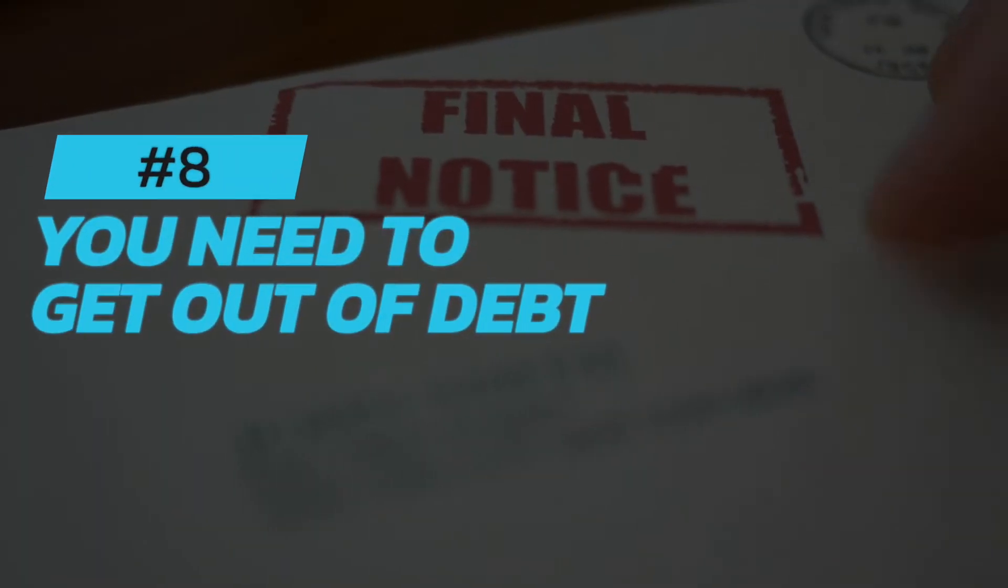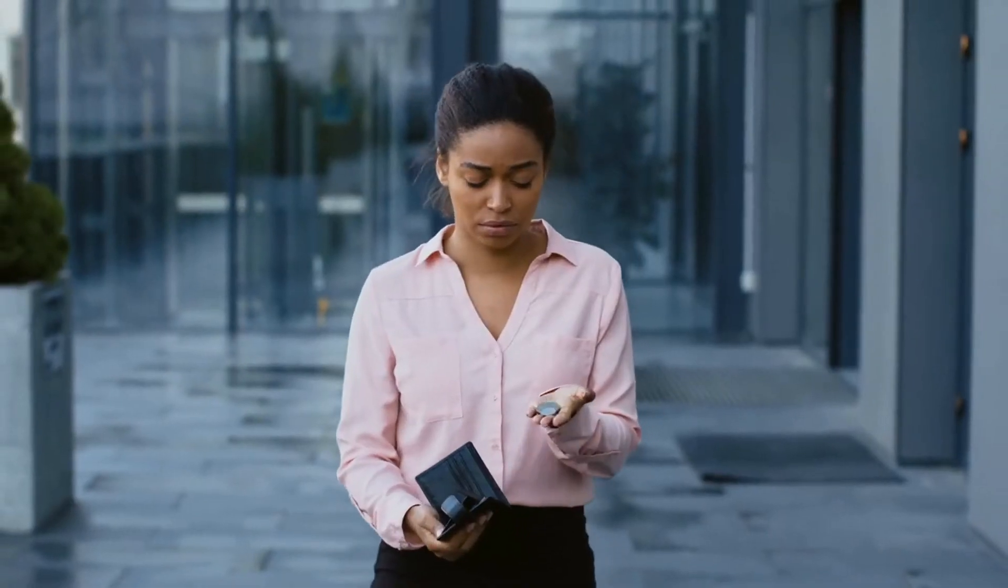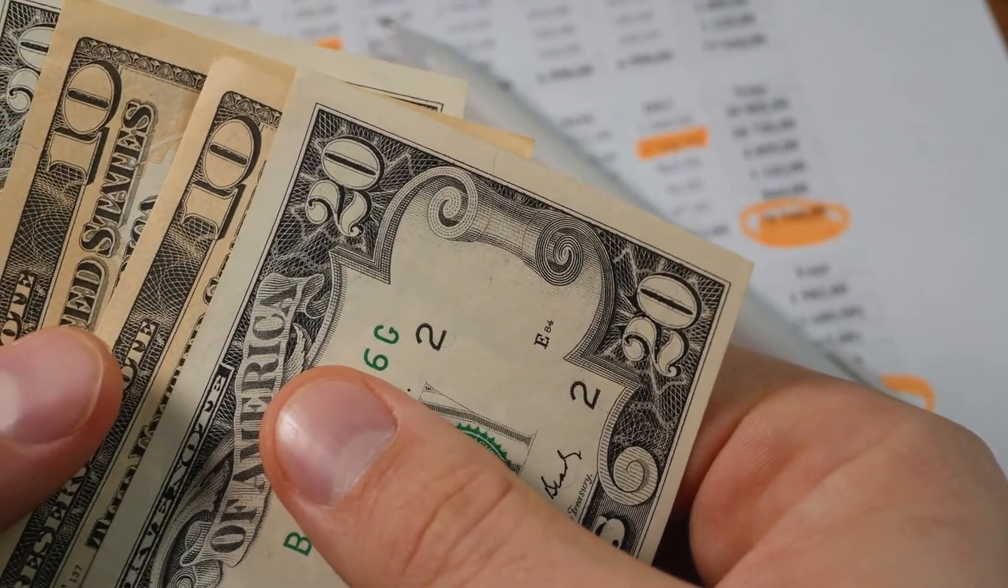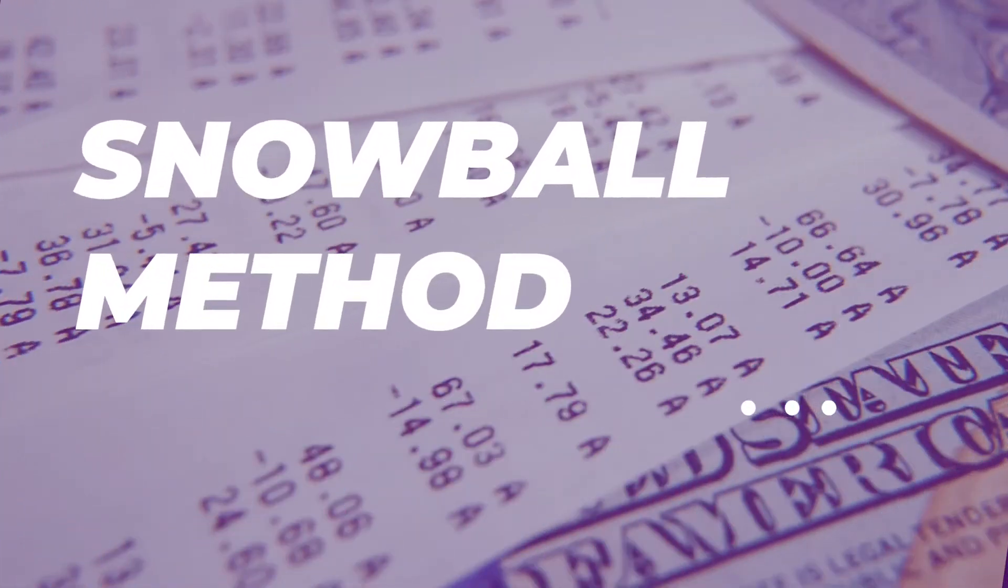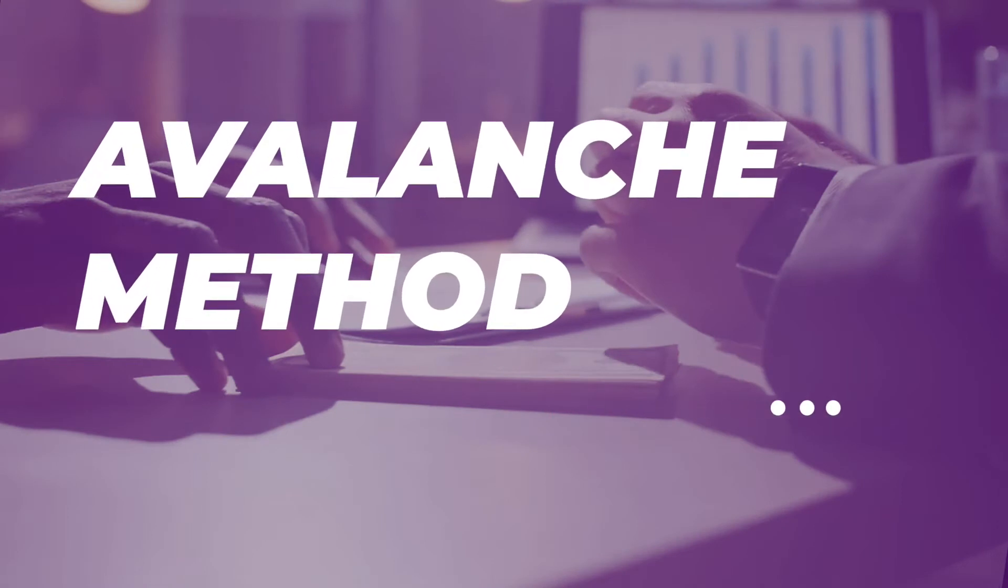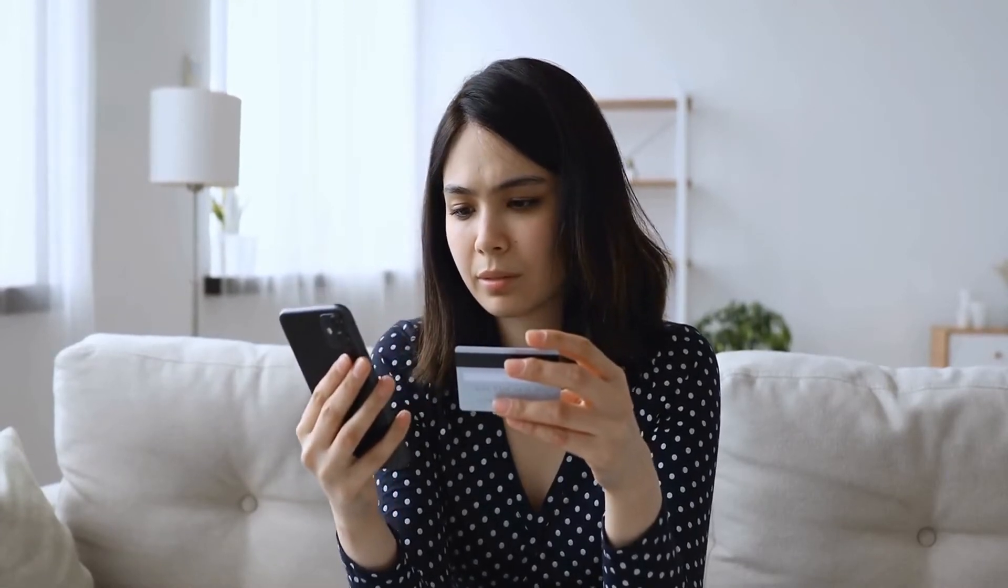Number eight: You need to get out of debt. Debt can be a major financial burden. The sooner you can get out of debt, the better off you'll be. There are several different ways to pay off debt. You can use the debt snowball method, where you focus on paying off your smallest debts first. Or you can use the debt avalanche method, where you focus on paying off your debts with the highest interest rates first. Whichever method you choose, make sure you stick to it. It's also important to make a plan for how you will avoid going into debt in the future.